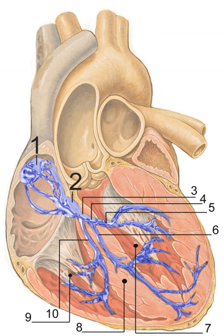Dysfunction of the conduction system can cause irregular, fast, or slow heart rhythms. Electrical signals arising in the SA node stimulate the atria to contract. Then the signals travel to the atrioventricular node, which is located in the interatrial septum.